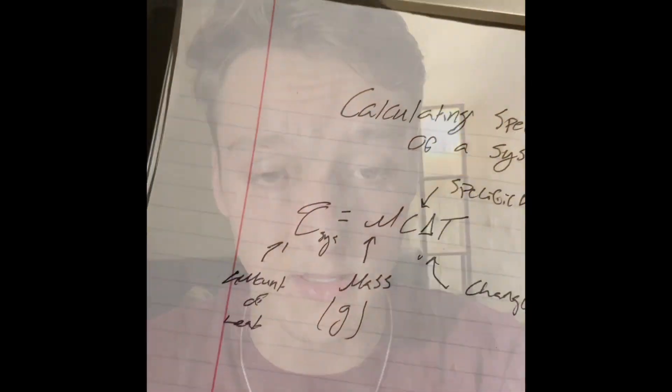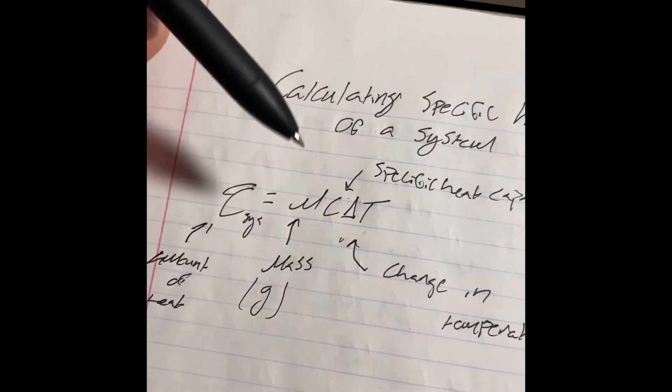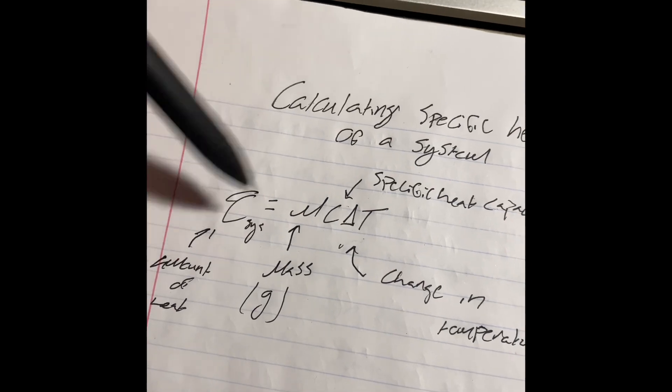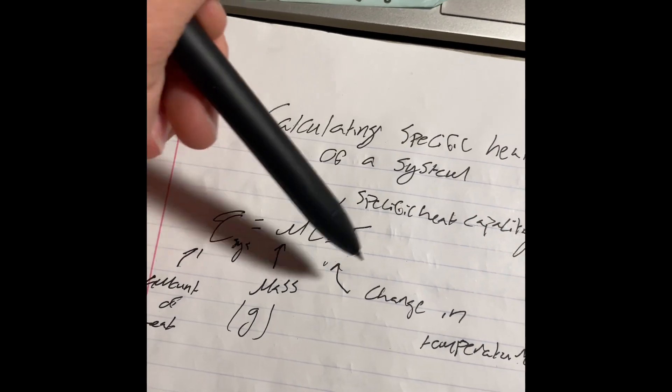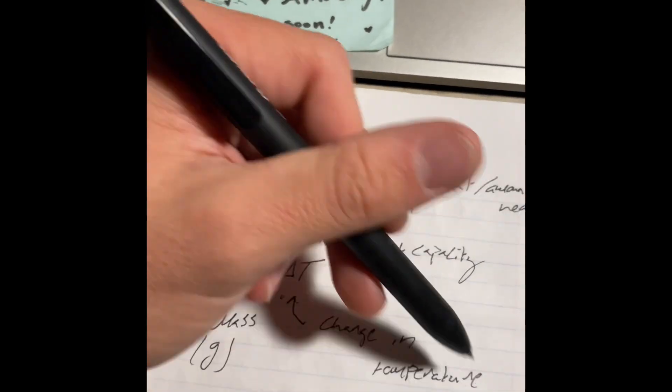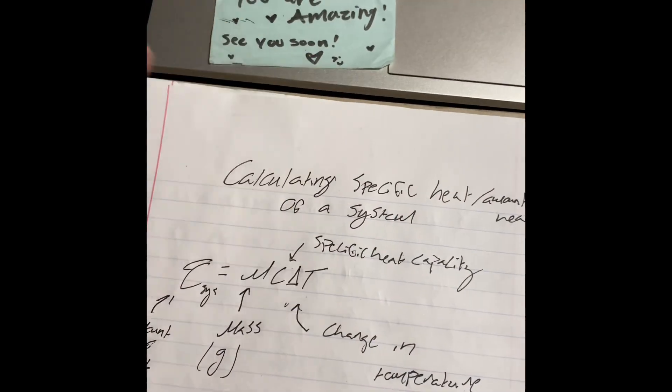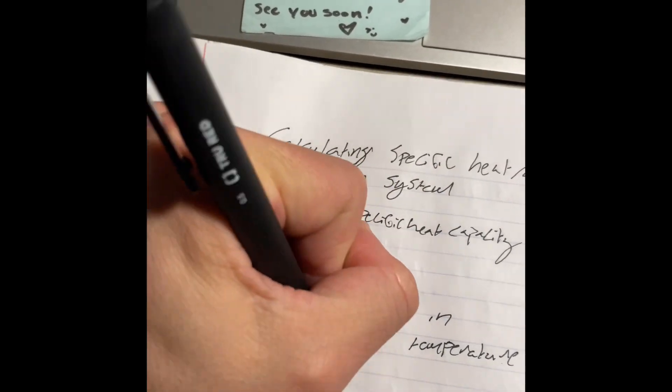So it's just a basic formula. The formula is Q equals MCAT, with the Q being the amount of heat in the system, the M being the mass, the C being specific heat capacity, and the delta T being change in temperature, which is final minus initial.